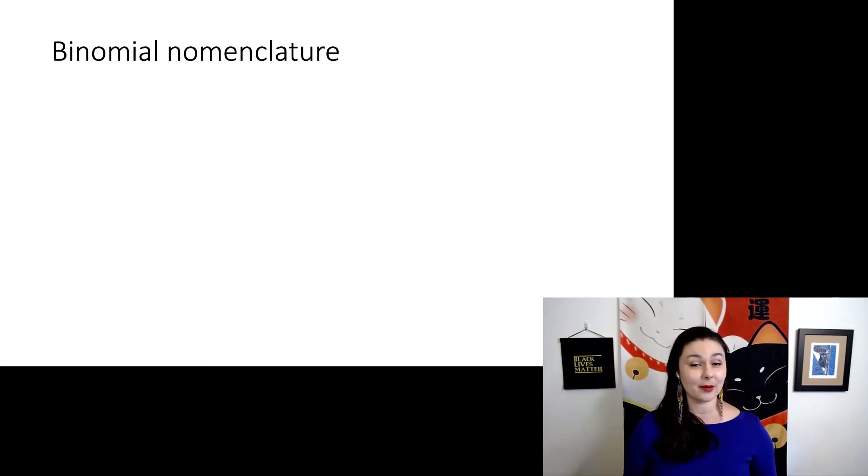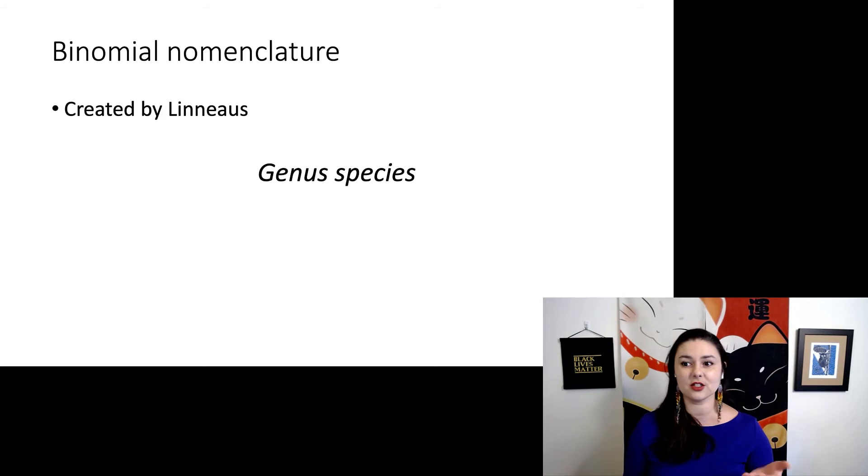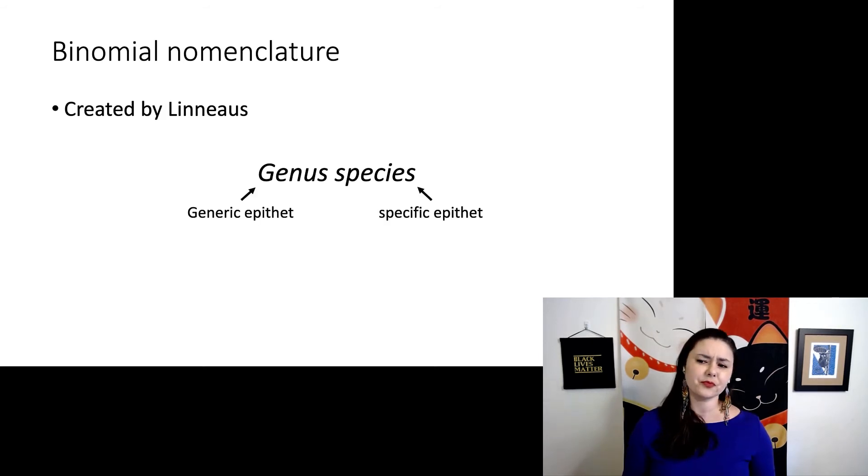Remember, when we are talking about species, that most specific level, we use binomial nomenclature. This was created by Linnaeus. And binomial means two names. We have our genus and our species. We make sure both of them are italicized. We capitalize the genus name, but the species name is not.